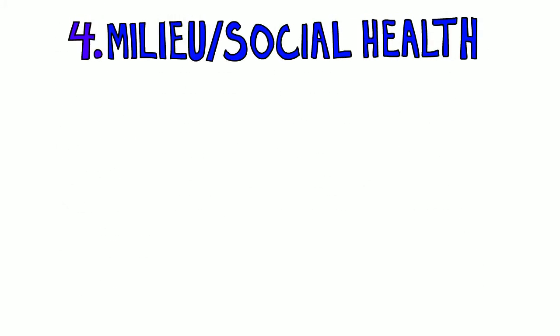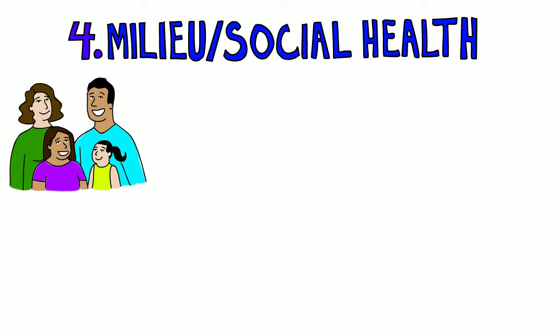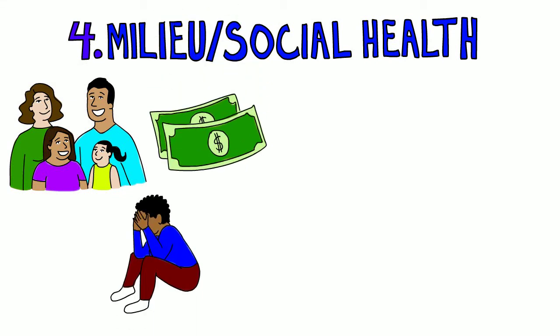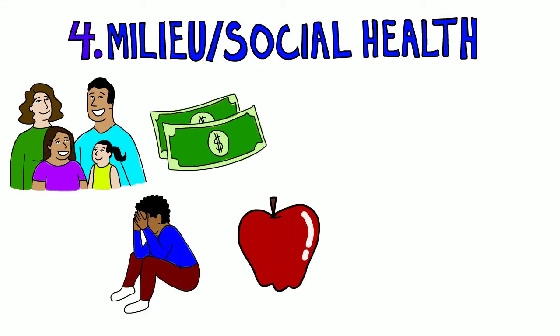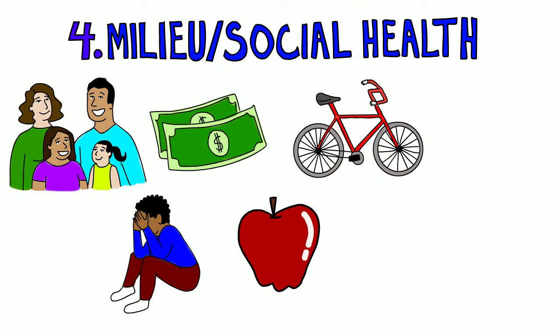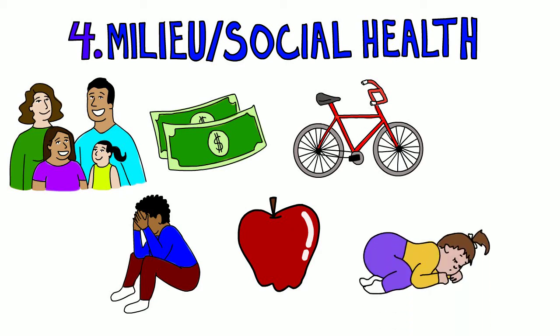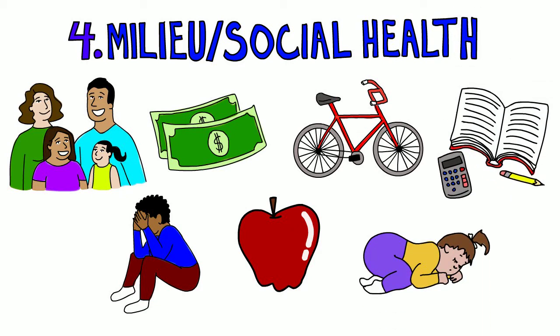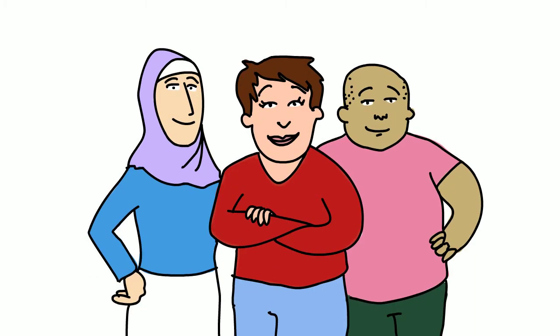Milieu, or social health, includes things like family health, stressors, income, food environment, opportunities for physical activity, sleep habits, and school support. To best support healthy children, we need to support their parents and caregivers' physical, mental, and financial health.